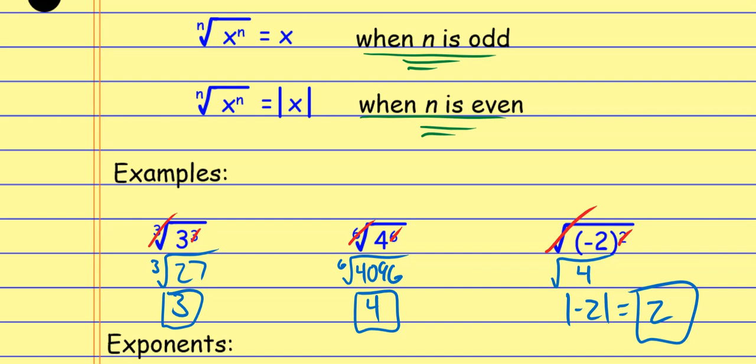So if I'm taking an even root, the answer has to come out positive, because the even root is taken away from an even exponent, and that even exponent makes the thing positive. If you have a negative number underneath, you can't take an even root or you get imaginary numbers. This stipulation exists to remind us that when taking that shortcut of canceling, we must ensure the answer is positive. We discuss this now because with variables, we don't know if they're positive or negative, so we use absolute value to ensure positivity.